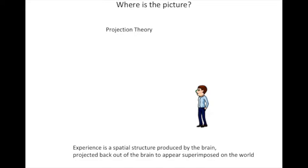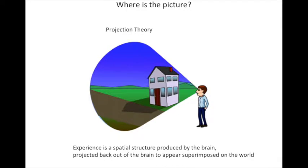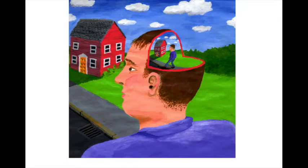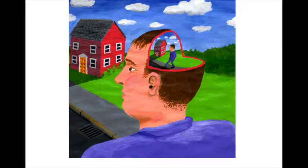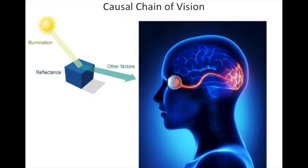Others have proposed a projection theory, whereby experience is a spatial structure produced by the brain but projected back out to appear superimposed on the world. The problem is that there is no evidence of this projection anywhere out in the world outside a person's head. Finally, there are those who insist it's possible to have a full-colored three-dimensional spatial experience in the absence of any explicit spatial representation in the brain. There's an information-theoretic problem with this, because the information in experience has an information content, and information cannot exist without a medium to carry it. The causal chain of vision clearly indicates that the place to look for the image of experience is right here in the visual cortex.